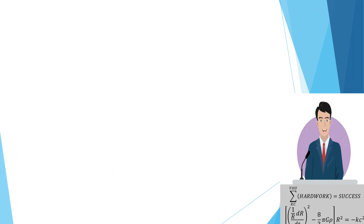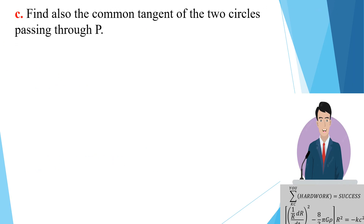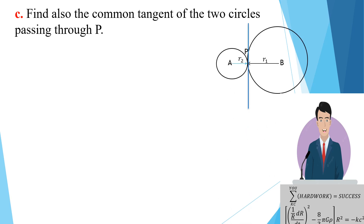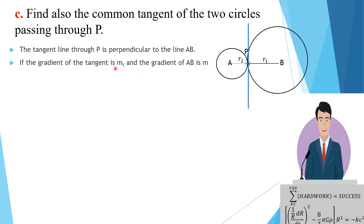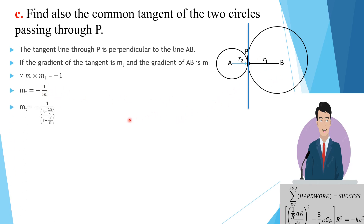Part C asks us to find the common tangent of the two circles passing through P. The common tangent at P is perpendicular to the line segment AB joining the two centers. If the gradient of the common tangent is mt and the gradient of line AB is m, then since the lines are perpendicular, mt × m = −1, so mt = −1/m. We know the coordinates of A (center of C2) and B (center of C1), so we can compute the gradient of AB.